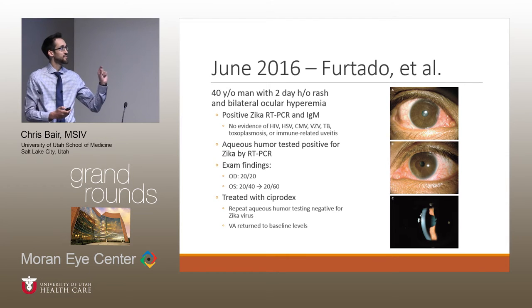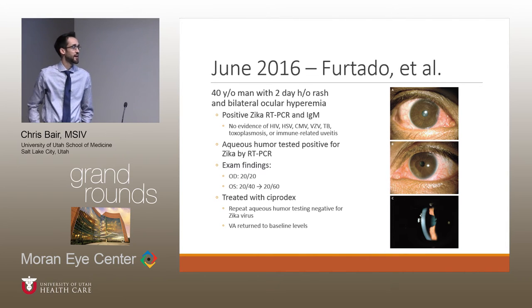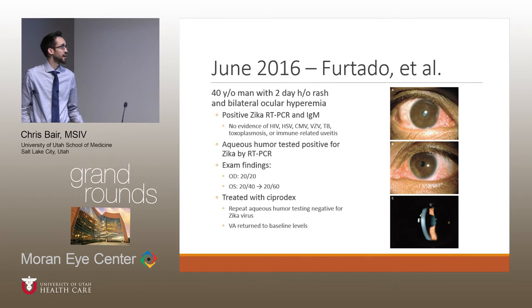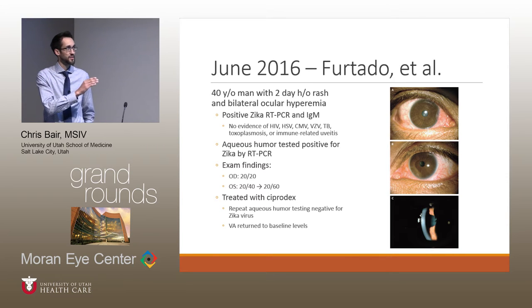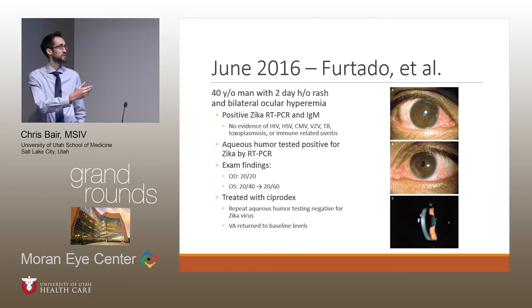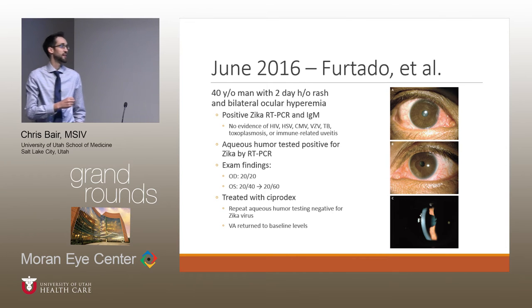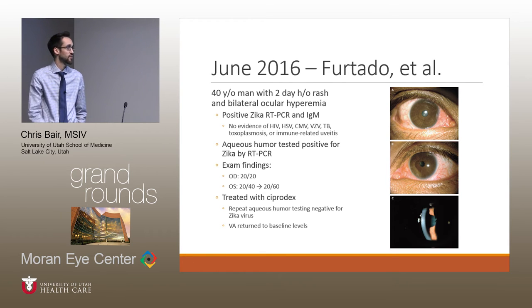I want to end with this case report published very recently. This patient presented with symptoms of Zika virus and tested positive by both PCR and IgM. While previous outbreaks in 2007 and 2013 only showed conjunctivitis, this patient developed uveitis. An anterior chamber paracentesis was done, and aqueous humor tested positive for Zika virus. Images show KPs and inflammatory cells in the anterior chamber, highlighting the picture of uveitis. The patient's visual acuity worsened slightly; he was treated with Ciprodex and recovered very well.